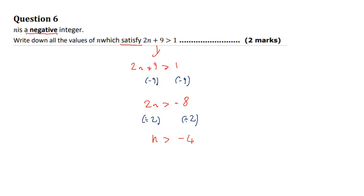Now, this says that n is greater than negative 4. Could n be negative 4? No,